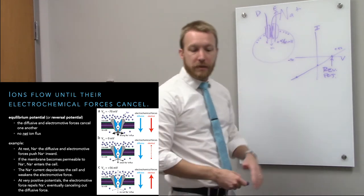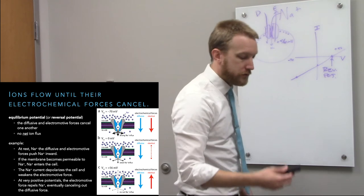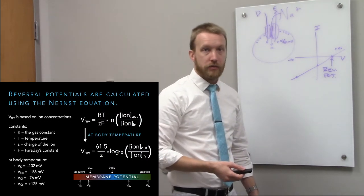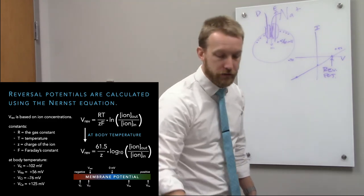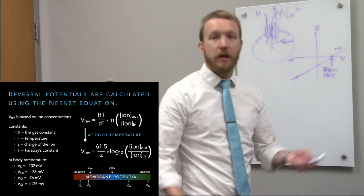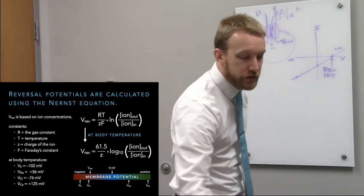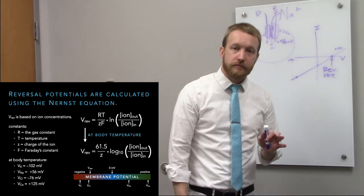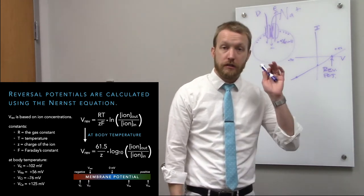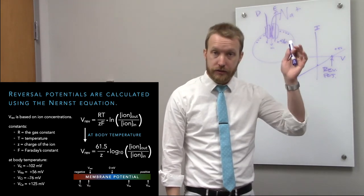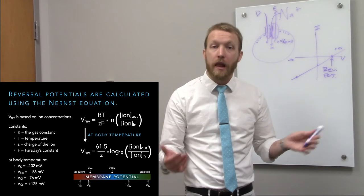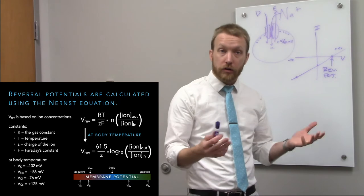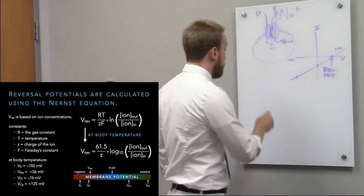The Nernst equation lets us calculate these reversal potentials — plug in the internal and external concentrations of each ion. The reversal potential for sodium works out to approximately +56 mV. You won't need to do these calculations on an exam, but there is a calculator provided.